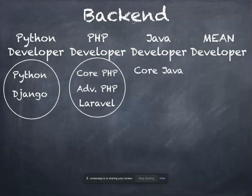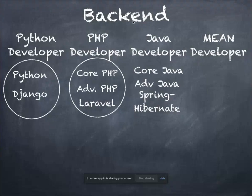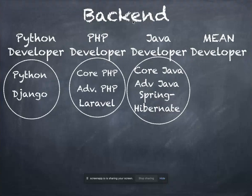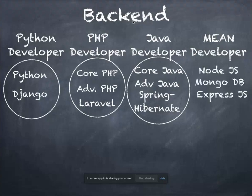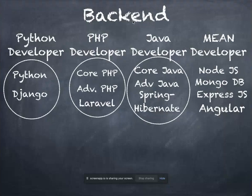For Java development, we have Core Java, Advanced Java, Spring, and Hibernate — Spring and Hibernate being Java frameworks. The pattern is consistent across all languages: you learn the language and its framework, because companies use frameworks. For MEAN stack, you learn Node.js, MongoDB, and Express.js. MEAN stands for MongoDB, Express.js, Angular.js, and Node.js. We also offer React.js, which is very similar to Angular, so students can be offered React as well.